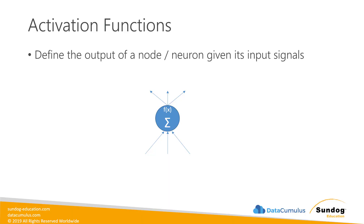We mentioned activation functions in passing earlier, but let's go into a little bit more depth as they are an important concept. There are many different kinds of activation functions you can choose from, and picking the right one can be important for the performance of your neural network. An activation function is the function inside of a given node or neuron that sums up all of the incoming inputs and decides what output it should send out to the next layer. Given the inputs, what should my output be? That's all an activation function is.